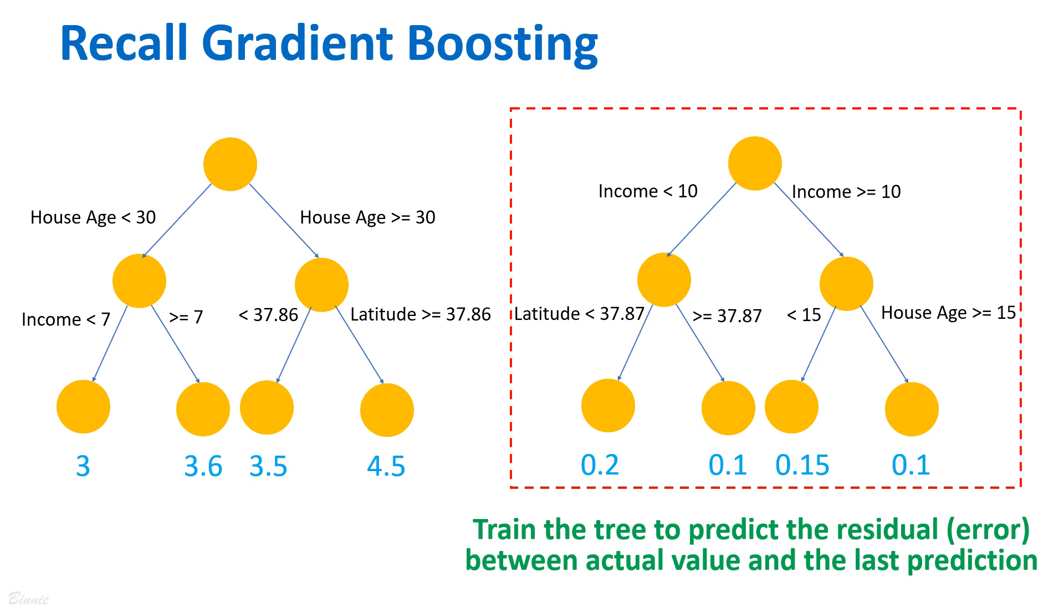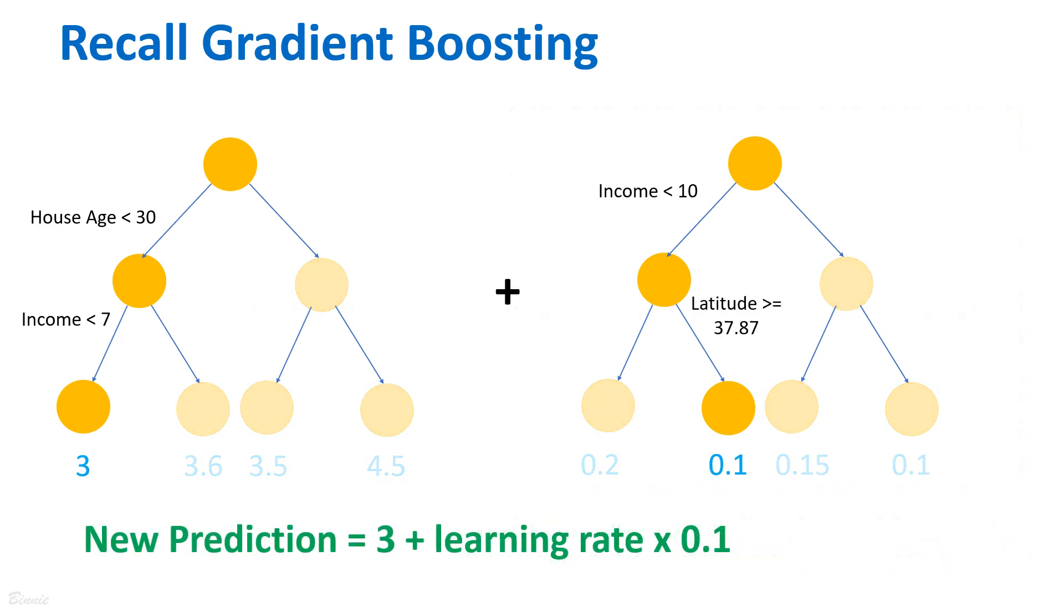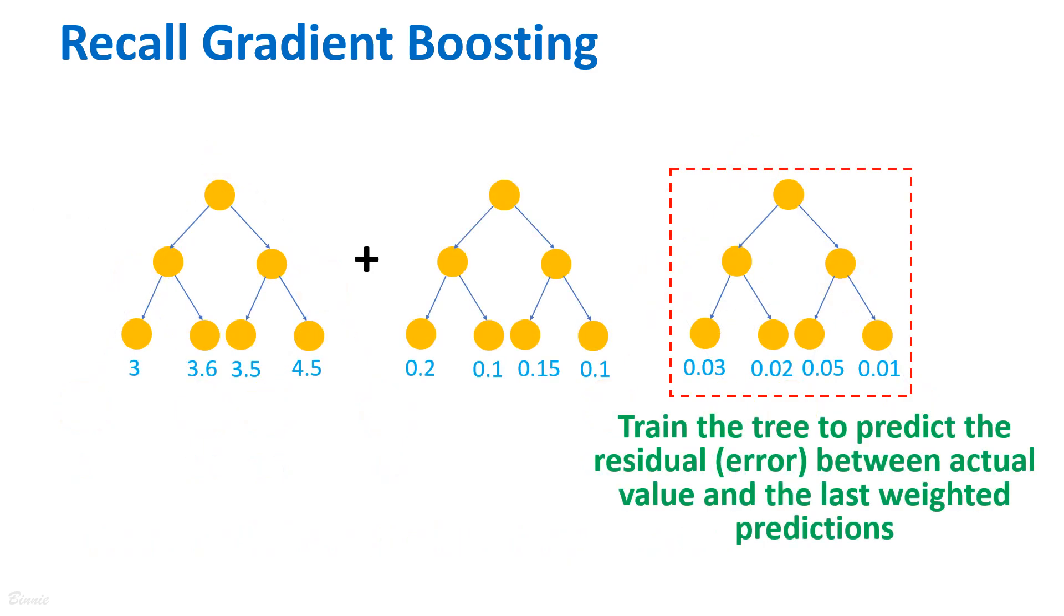Gradient boosting trains a new tree to predict the residual between the actual target value and the last predictions. After the new tree is built, the new prediction is a weighted sum of the predictions from two individual models with a learning rate. Then, gradient boosting repeats the process and builds another tree to predict the residual error between the actual value and the last weighted predictions.